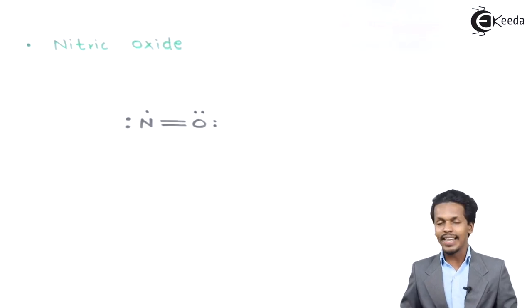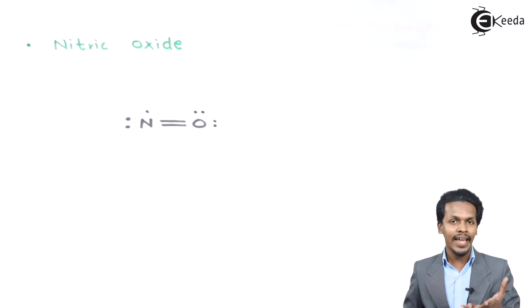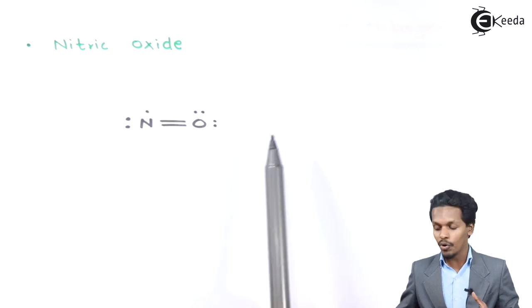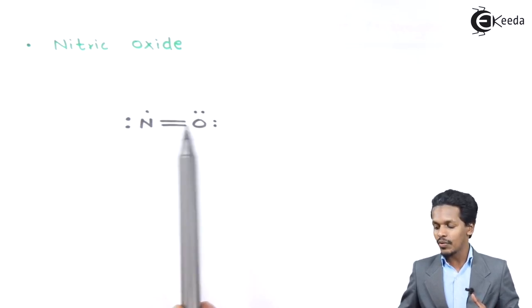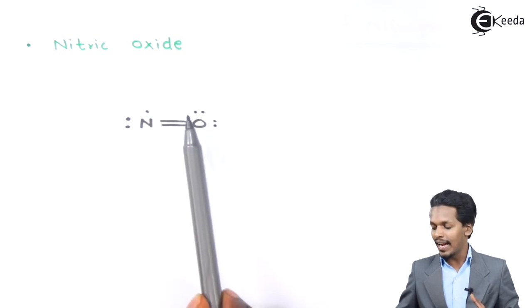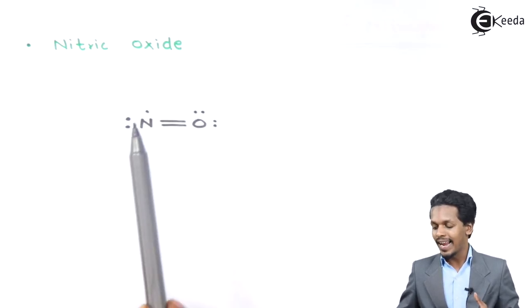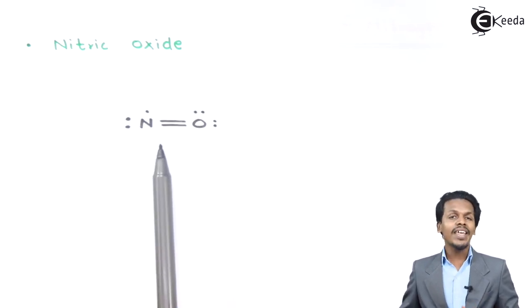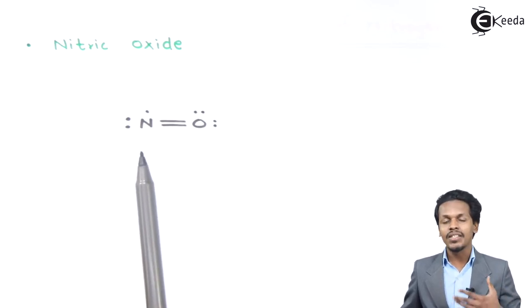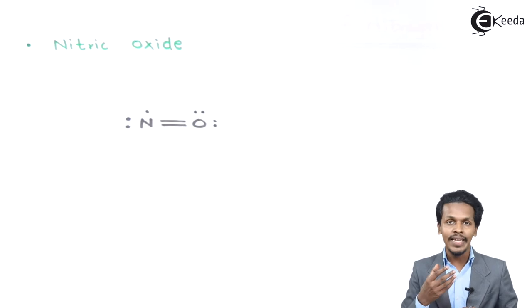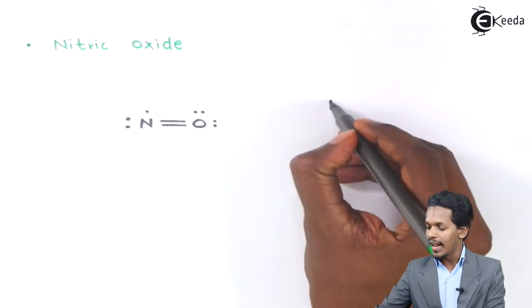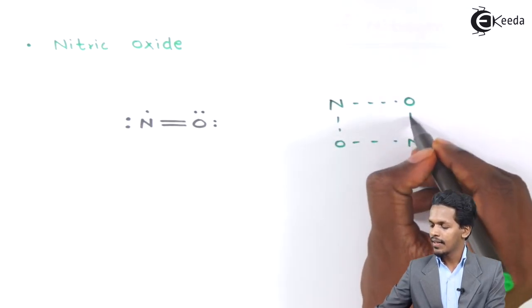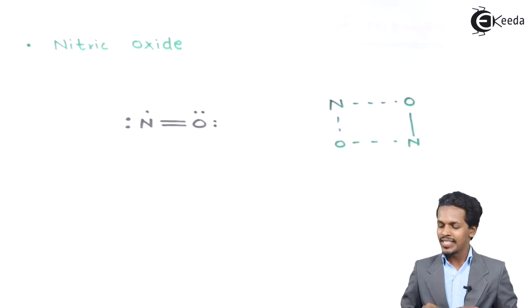The next is Nitric Oxide, which has a formula of NO. The structure is also linear — N double bond O — with a lone pair of electrons on Nitrogen and two lone pairs of electrons on Oxygen, plus a single unpaired electron on Nitrogen. Basically, if it is in a gaseous state it is paramagnetic, but if it is in solid or liquid state it will form a dimer, which is diamagnetic.